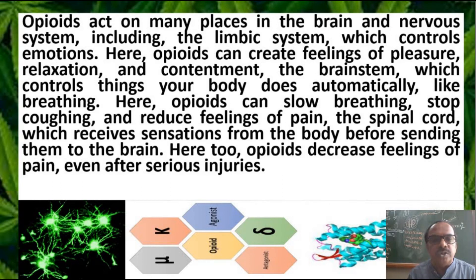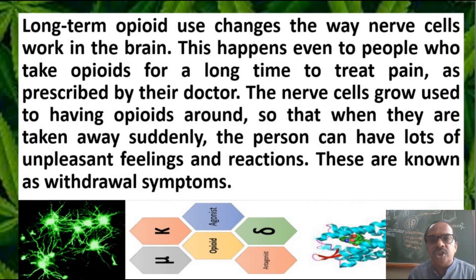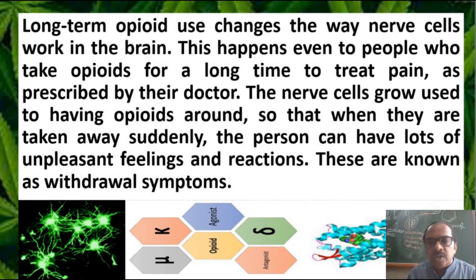In the brain stem, which controls automatic functions like breathing, opiates can slow breathing, stop coughing, and reduce feelings of pain. In the spinal cord, which receives sensations from the body before sending them to the brain, opiates decrease feelings of pain even in serious injuries. Long-term use of opiates can change the way normal nerve cells behave and the way the brain functions — even for people taking opiates as part of their prescribed treatment. Nerve cells grow accustomed to having opiates around, so when they are suddenly removed, the person can experience unpleasant withdrawal symptoms, leading to addiction.